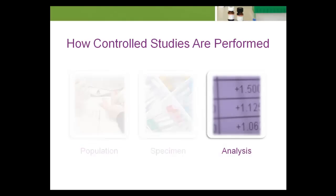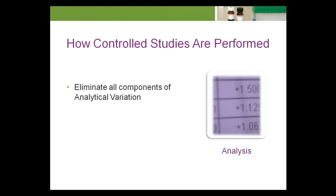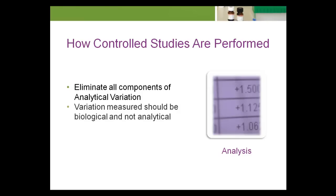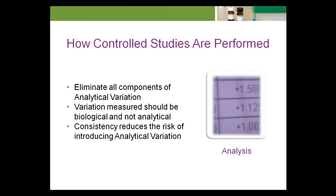Lastly, during the analysis of the specimen, it's important to eliminate all components of analytical variation. When this is accomplished, the variation measured should be biological and not analytical. Consistency of instrument, operator, reagent lot numbers, calibrator lot number, and testing environment reduces the risk of introducing analytical variation.